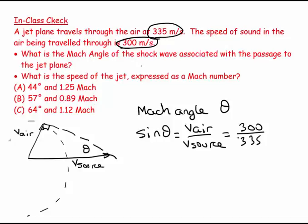If I get my calculator out, first thing you always do is check which mode you're in. So I check mode and I am in degrees. Then we say this is second sine — that's sine to the minus 1 of 300 divided by 335 — and this is going to be 63.57 degrees. So theta equals 63.57, which I'll call 64 degrees. So that's my angle — it's from the straight-through direction to the shock wave.